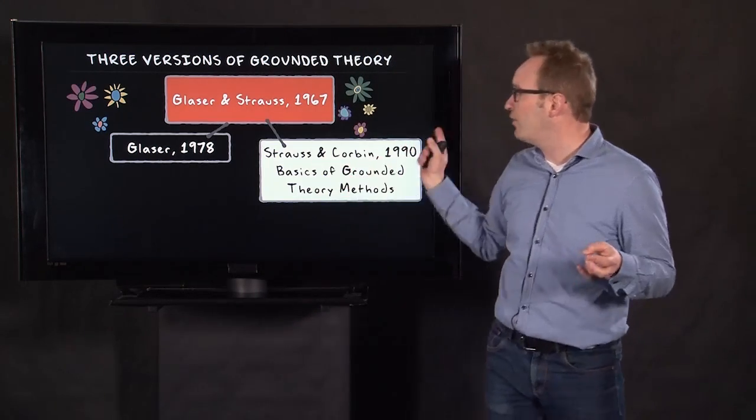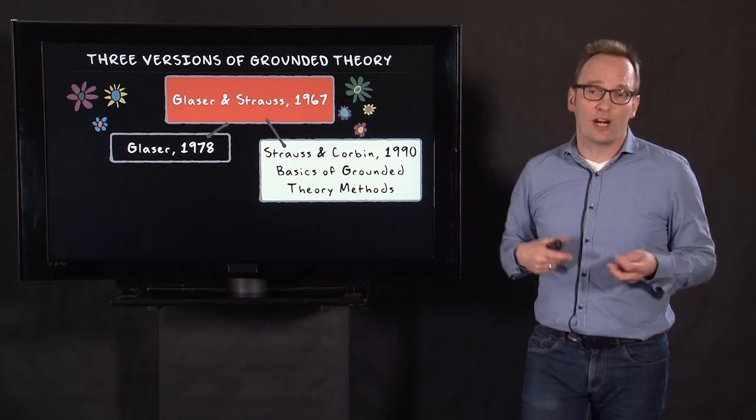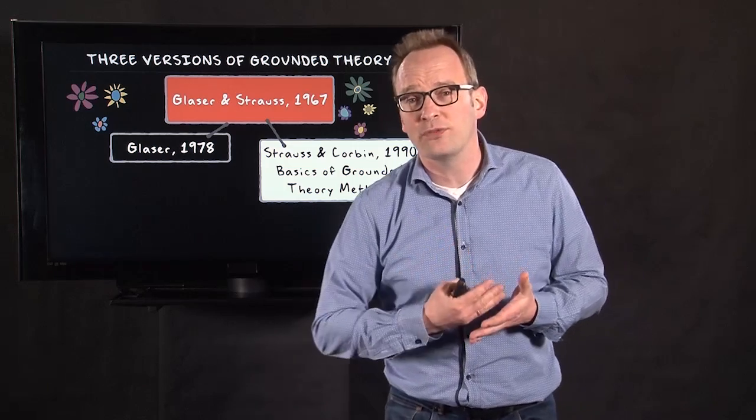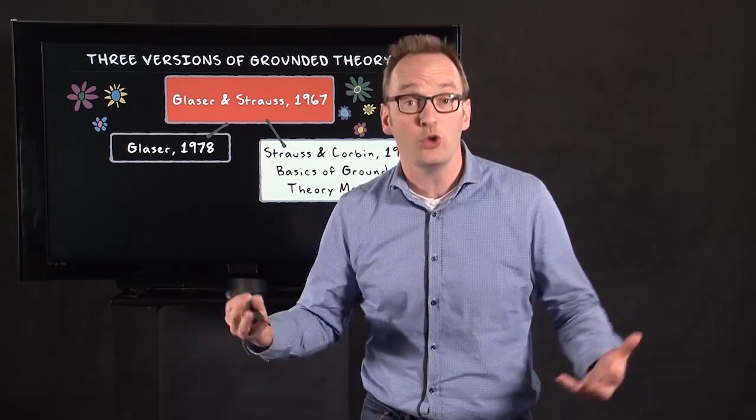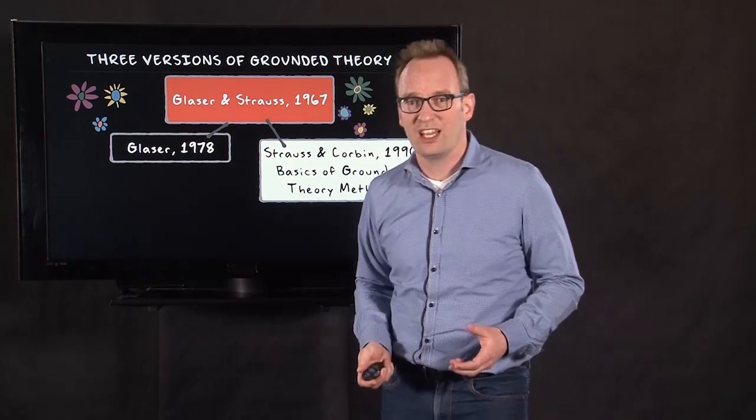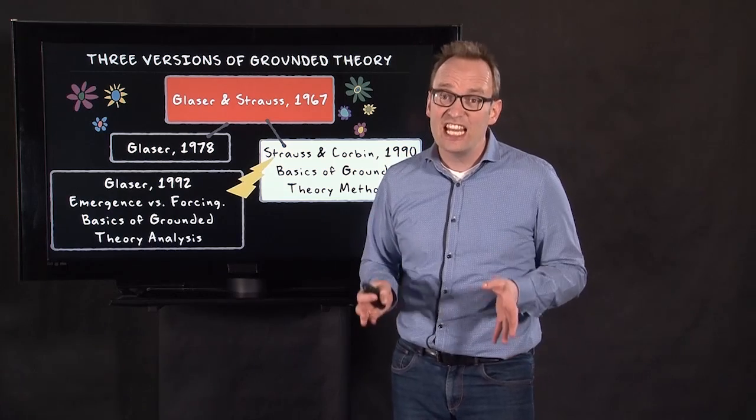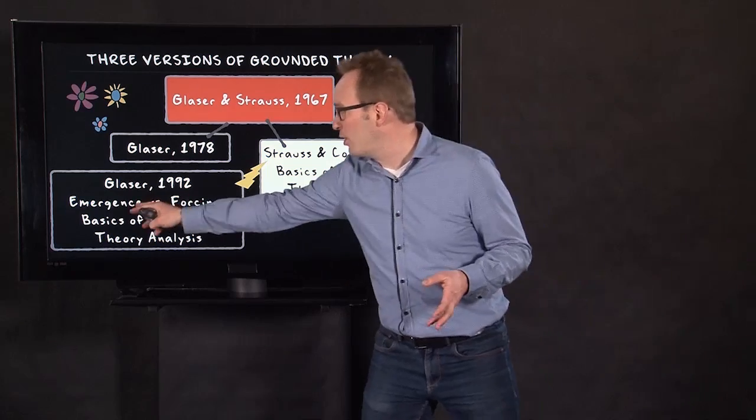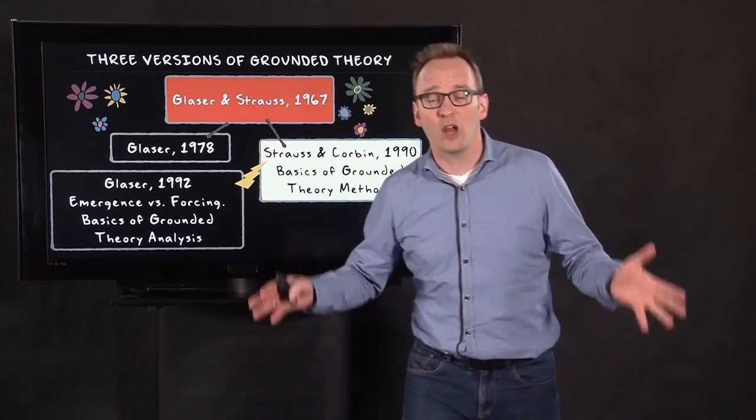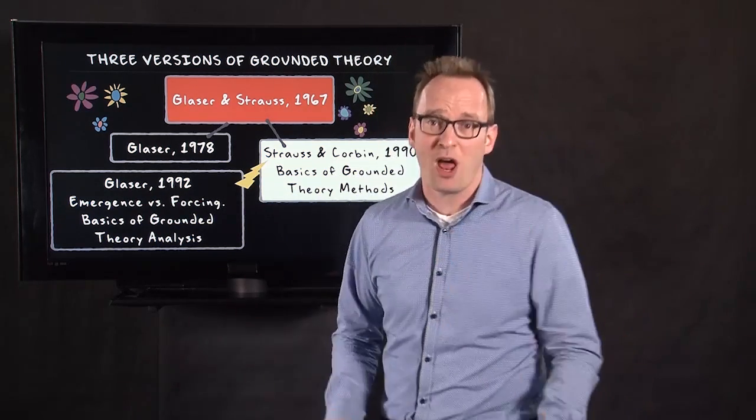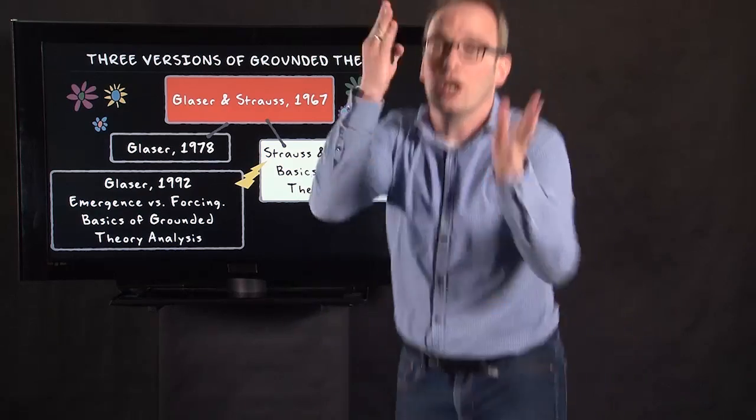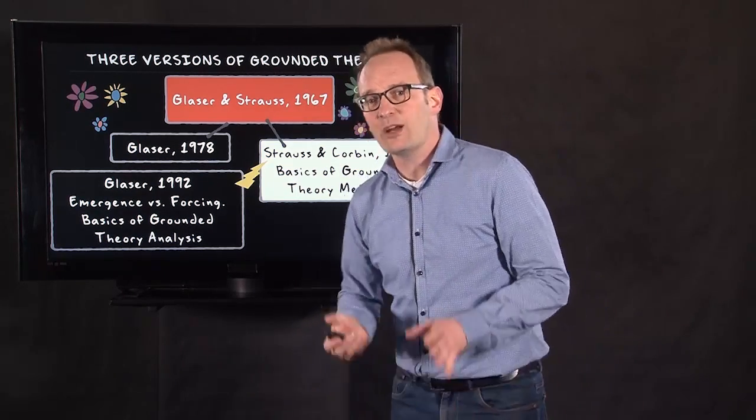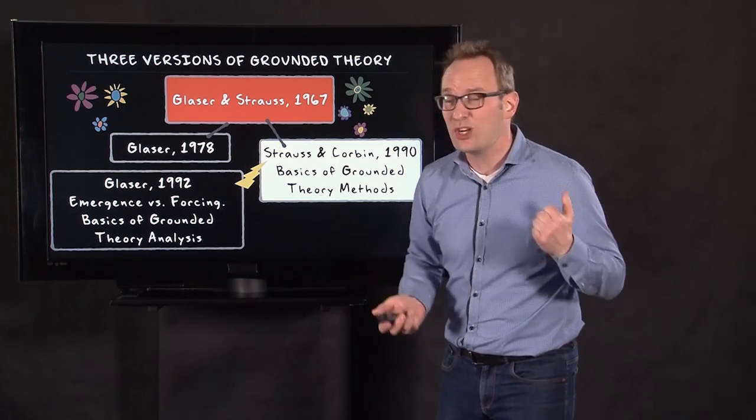In 1990, Strauss and Corbin wrote Basics of Grounded Theory Methods. And in this book, they gave some sort of recipe in order to do Grounded Theory methodology. Glaser read it and really disliked it. He wrote a book within two years saying this is not what Grounded Theory is about. I demand that you withdraw this book because what you wrote is a completely new method. So it was pretty strict, and the love was surely over.